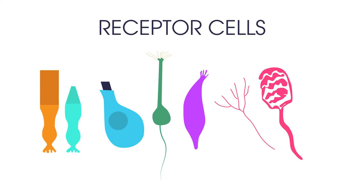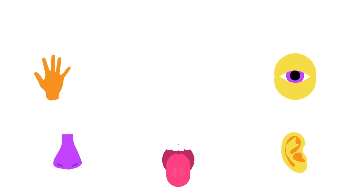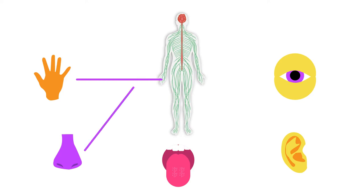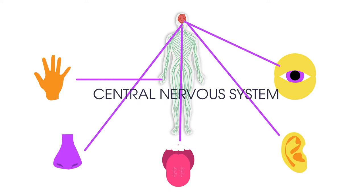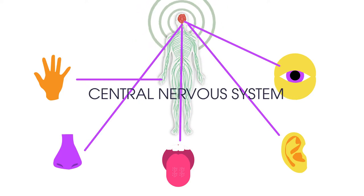Can you name some human sense organs and what they detect? When the receptor cells of the sense organ are stimulated, they relay this information along nerve cells or neurons to the central nervous system. There are different types of receptor cells which are sensitive to different stimuli.